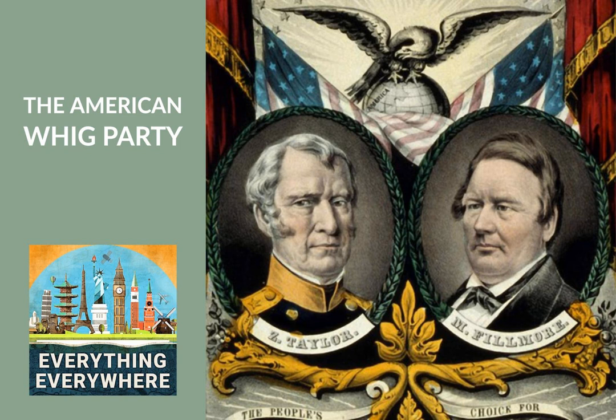Andrew Jackson dominated the political landscape during this era. From 1828 to 1836, he was president, and even after his presidency, he cast a long shadow over American politics. The opponents of Jackson were at first simply known as anti-Jacksonians, because they were united in their opposition to Jackson. It wouldn't be correct to say that the anti-Jacksonians were simply a revival of the Federalist Party. By this time, there had been a complete realignment in the American political system. Some Democratic-Republicans went on to form the new Democratic Party, but some also became anti-Jacksonians.